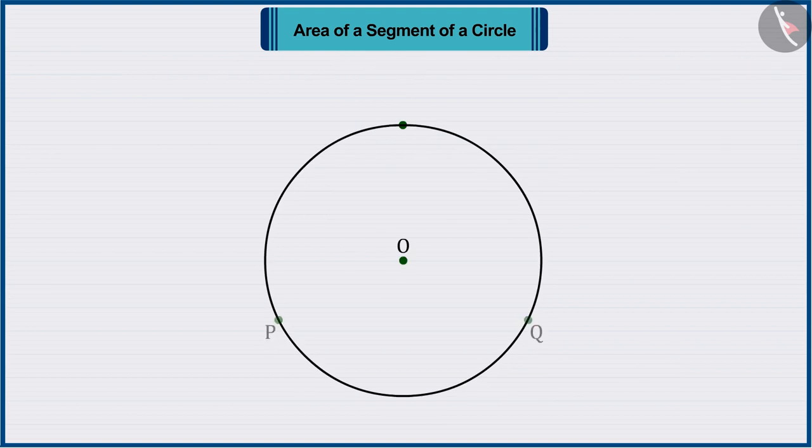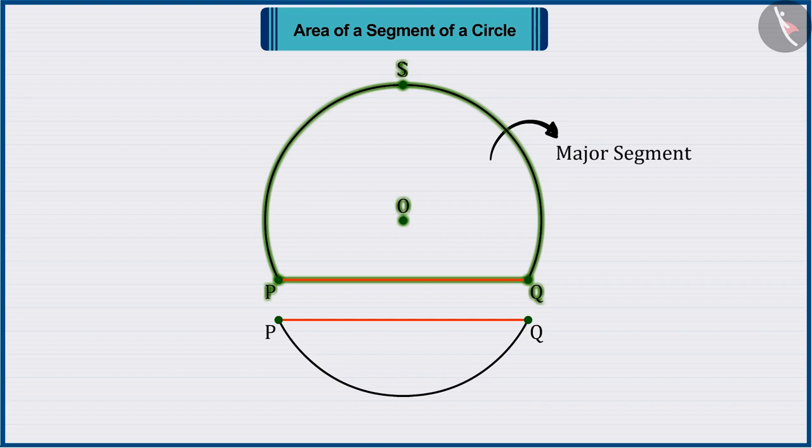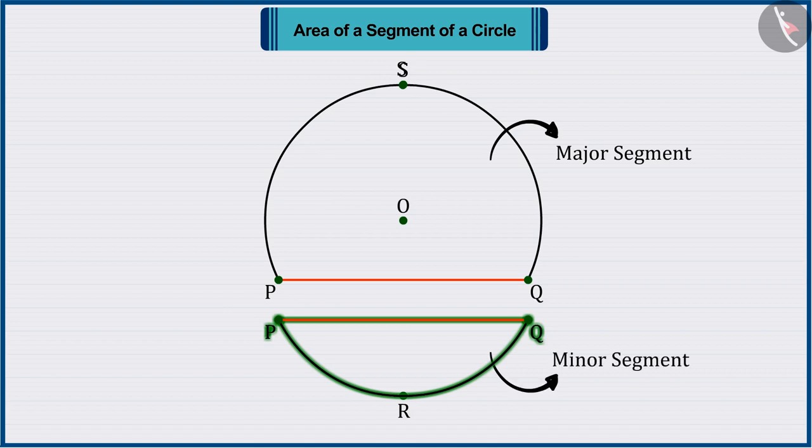As you know, a chord divides the circle into two parts, in which one part is bigger and the other is smaller. The larger part PSQ is called the major segment, and the smaller part PRQ is called the minor segment.